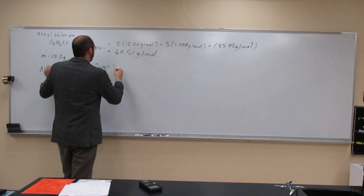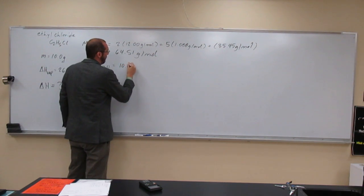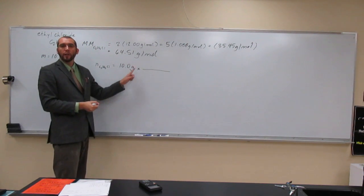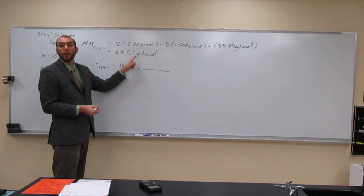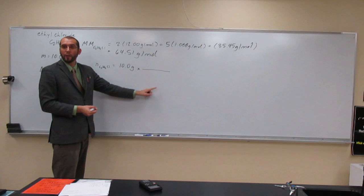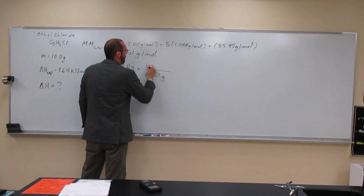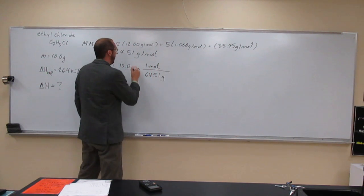Okay, so we know how many grams we've got. And we want to cancel out grams and get moles, right? So, we're going to put the grams on the bottom, right? Is everybody okay with that? Okay, so 64.51 grams and one mole on the top.